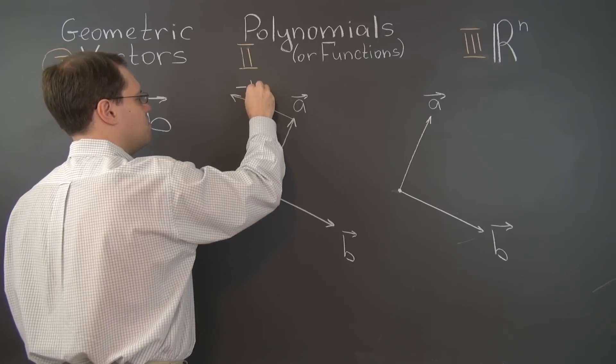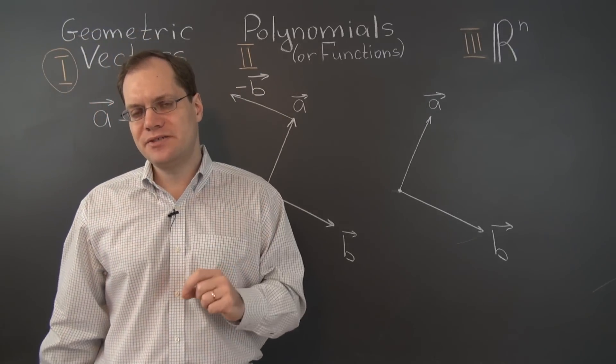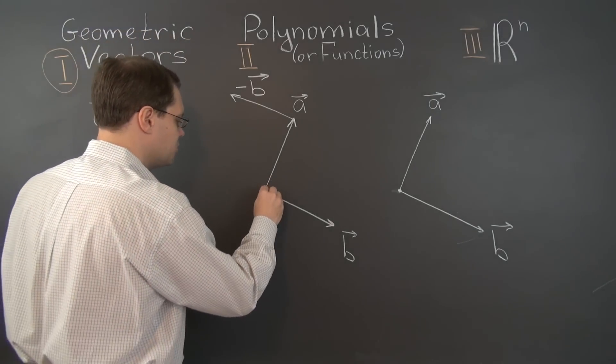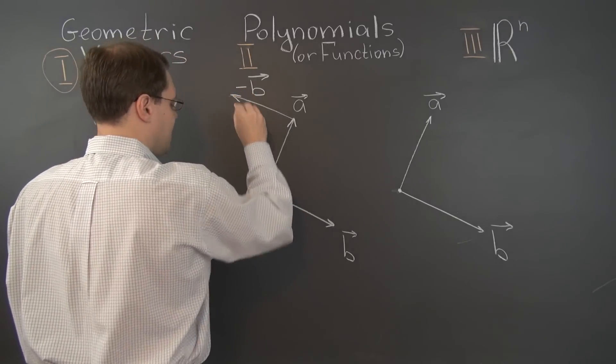Right here, this is minus B. And then you simply add minus B to A according to whichever rule you prefer. We're using tip-to-tail, so here it is.